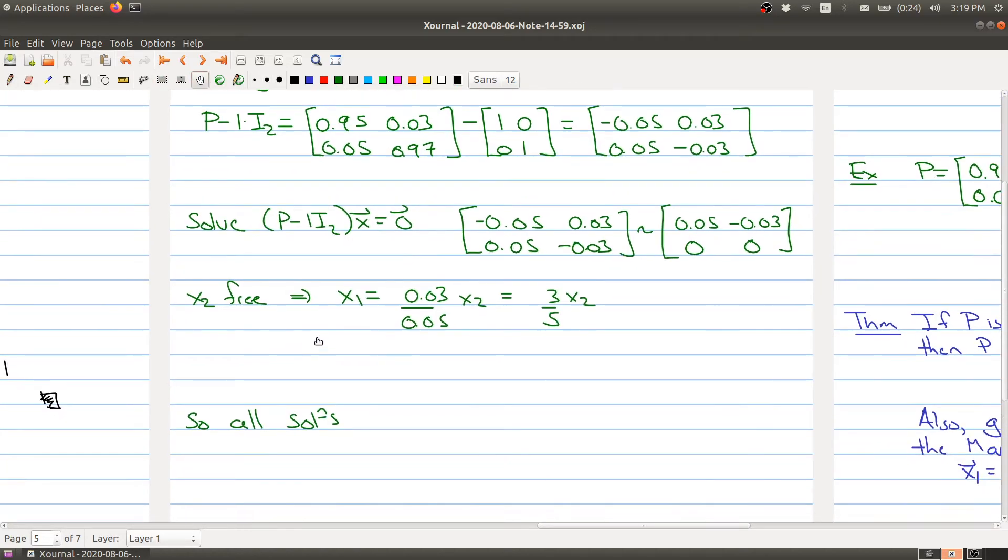So all solutions, so in particular, the eigenspace of lambda equals one is 3 fifths, 1, times T, as we let T run through R. All right. So this is the eigenspace of lambda equals one. So this is kind of the stuff we've learned in chapter five.